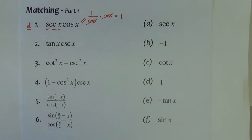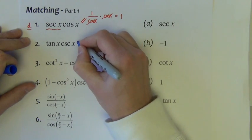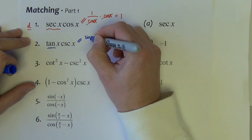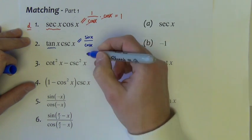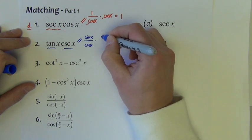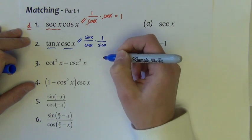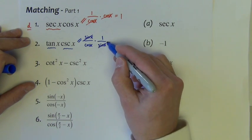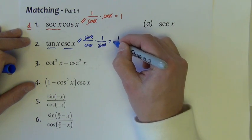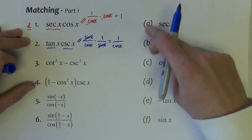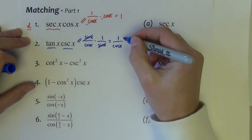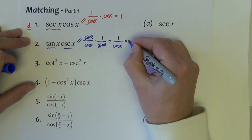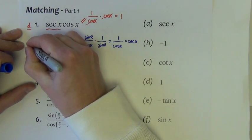Next, number 2: tan x times cosecant x. It is true that tan x equals sine x divided by cosine x — that's the quotient identity for tangent. And cosecant x equals 1 divided by sine x. By changing everything into sines and cosines, we have sine x on top and bottom, which cancels out, leaving 1 divided by cosine x. And 1 divided by cosine x is secant x. So number 2 matches to a — secant x.